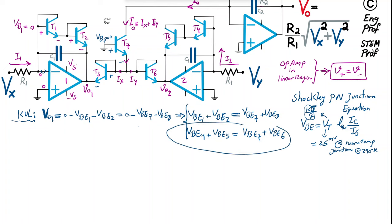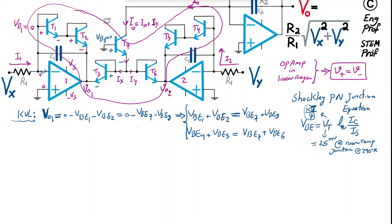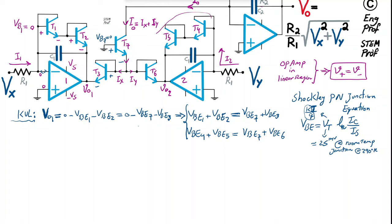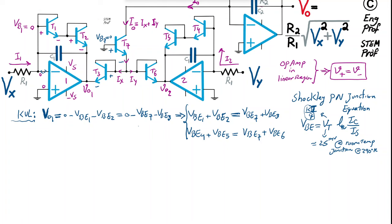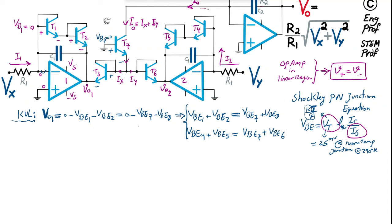If all seven transistors are on exactly the same chip, they share the same temperature, junction properties, and process parameters, giving identical IS and VT for all of them. If we are limited to quad transistor packages, we must use two separate packages.